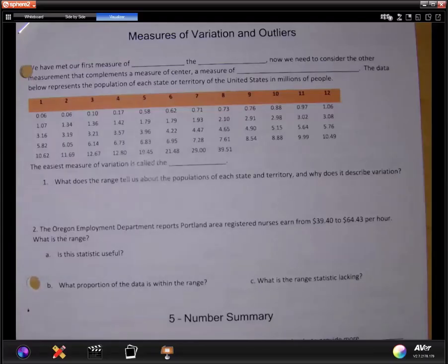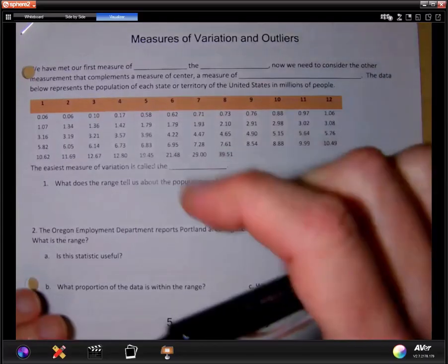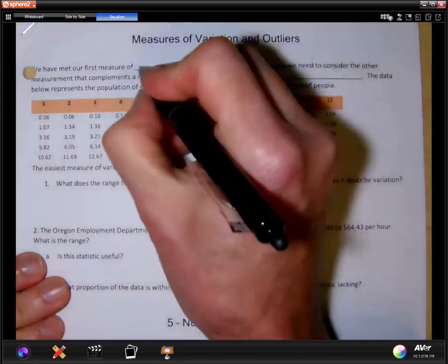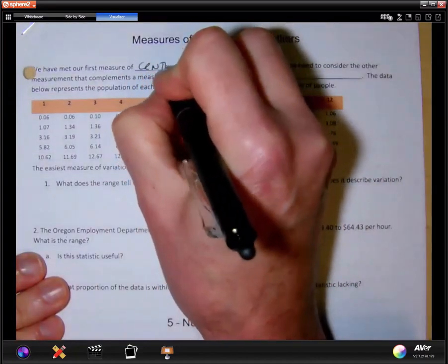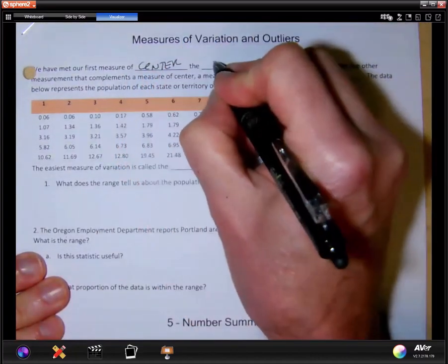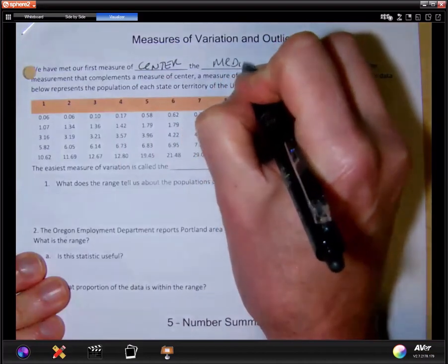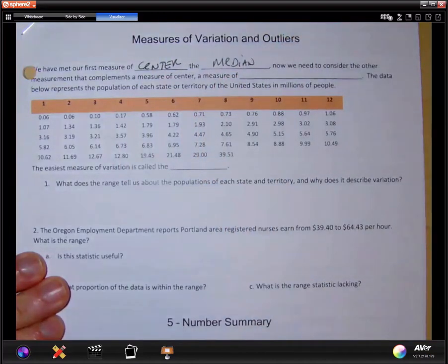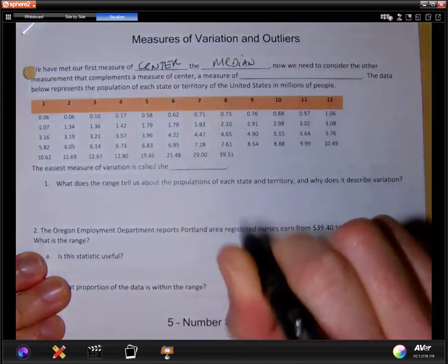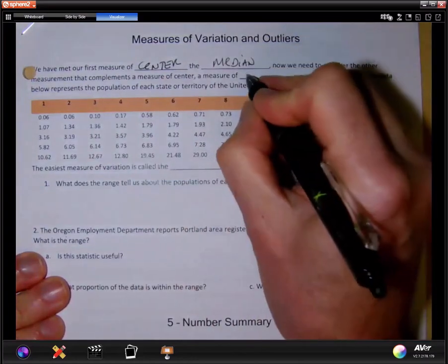Let's look at the measure of variation. Now we have met our first measure of center, the median. Now we need to consider the other measurement that complements the measure of center, the measure of variation.